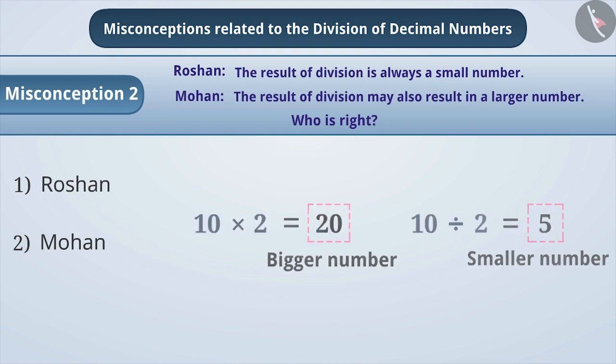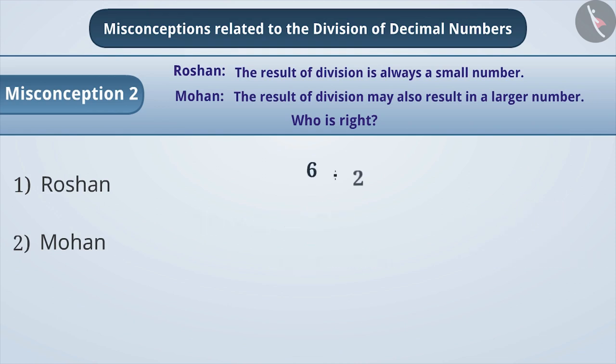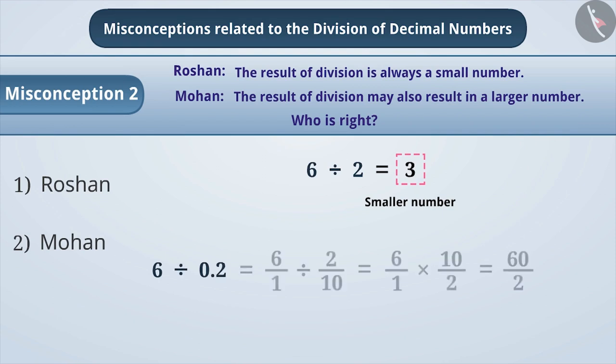Let's resolve this misconception. If we divide 6 by 2, we get the result 3. But if we divide 6 by 0.2, we get the result 30. So, we can say that the result of division cannot always be a small number.